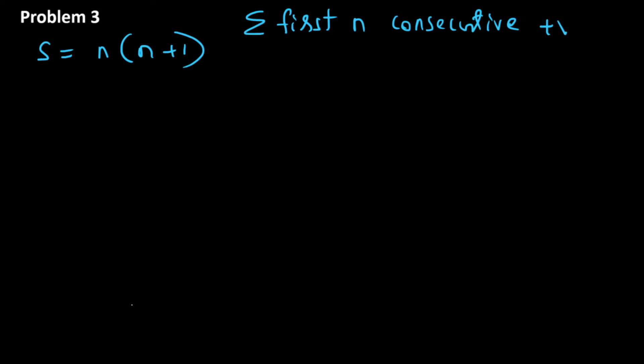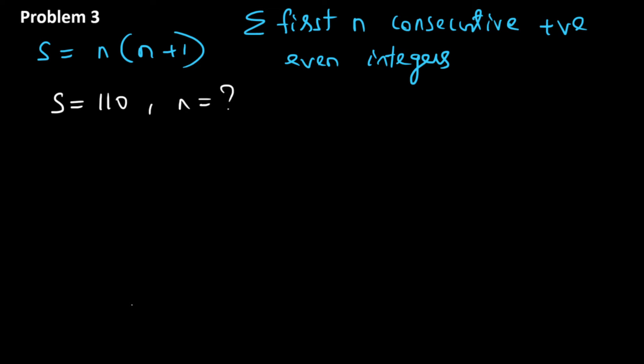In question 3, it's mentioned that the sum of the first n consecutive positive even integers is given as n(n+1), and that the sum is obtained as 110 for some n. We have to find the value of n. You can do this question in multiple ways, but the best way is to look at the options.